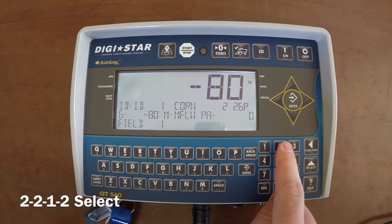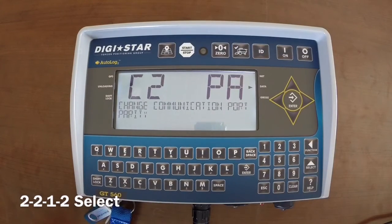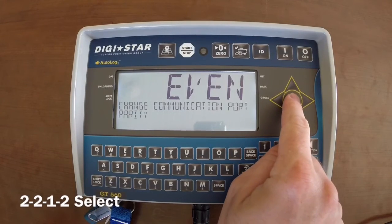Type in 2202 and then the select button. Make sure it says even and then press the enter button.